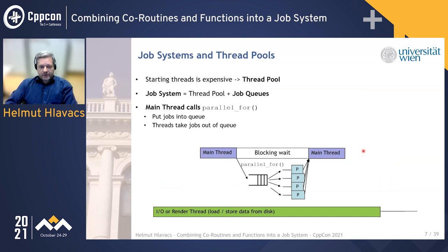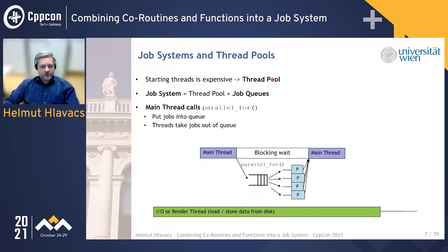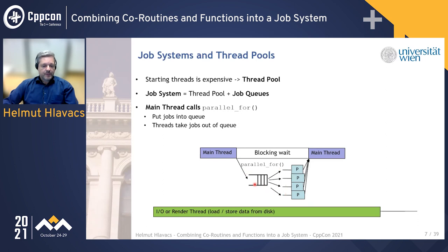How do we manage using that many threads? One thing is clear: starting new threads costs a lot of time, and you cannot start a thread for every piece of work. So we don't want to start threads all the time. Instead, we start a fixed number of threads — one for every virtual core — and this number never changes. This is called a thread pool. We start these threads when we start the job system, and the thread pool contains threads that are continuously searching for work.